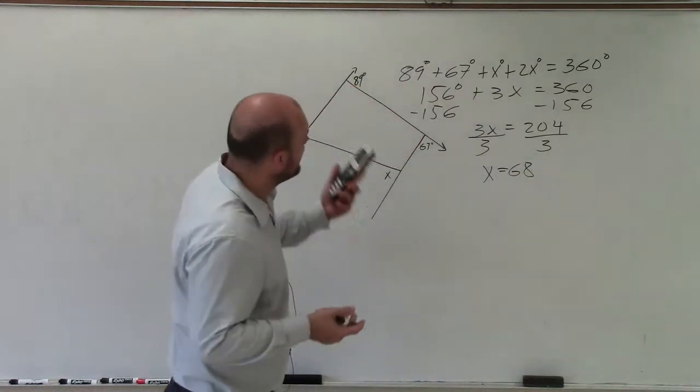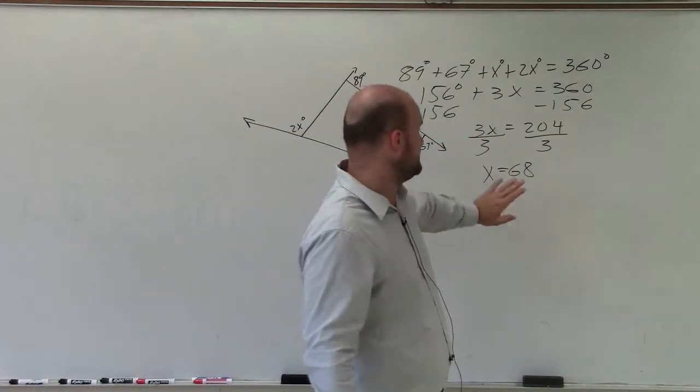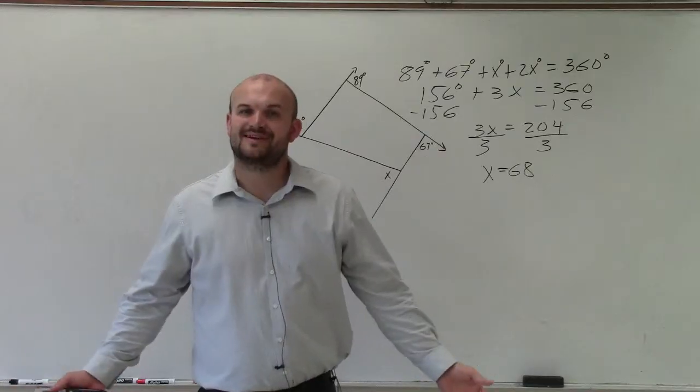So there you go, ladies and gentlemen. Determine your exterior angles, write the sum, they all add up to 360, and you set them equal there. There you go. Thanks.